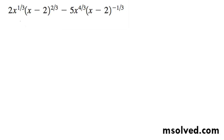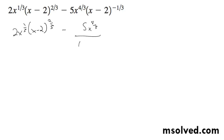You can rewrite this with positive exponents, so I get 2x raised to the 1/3rd, x minus 2, 2/3rds minus 5x to the 4/3rds over x minus 2 raised to the positive 1/3rd.